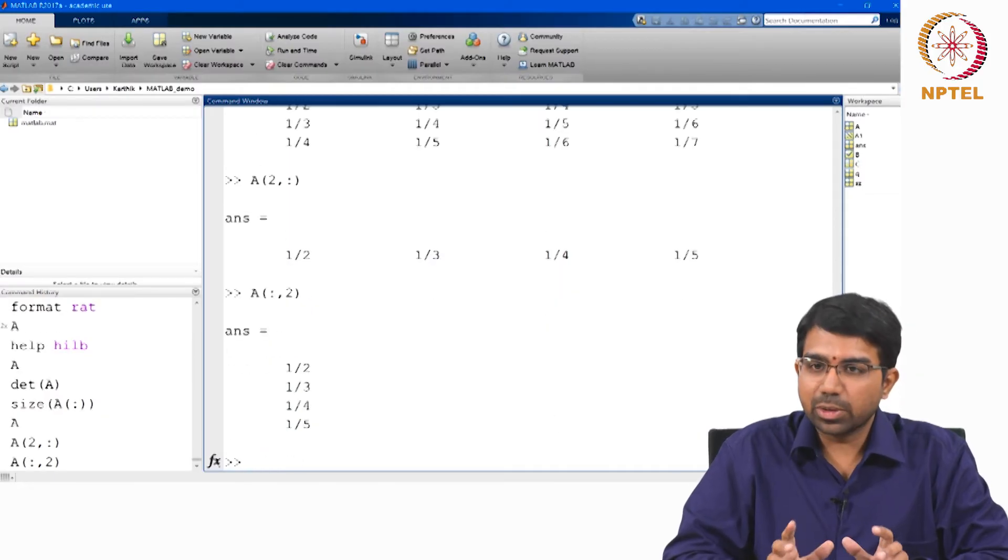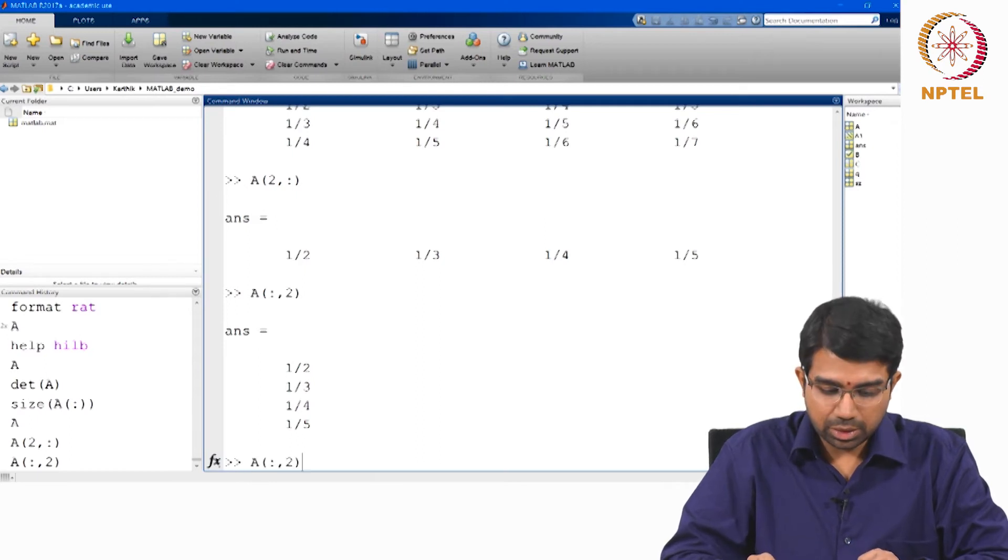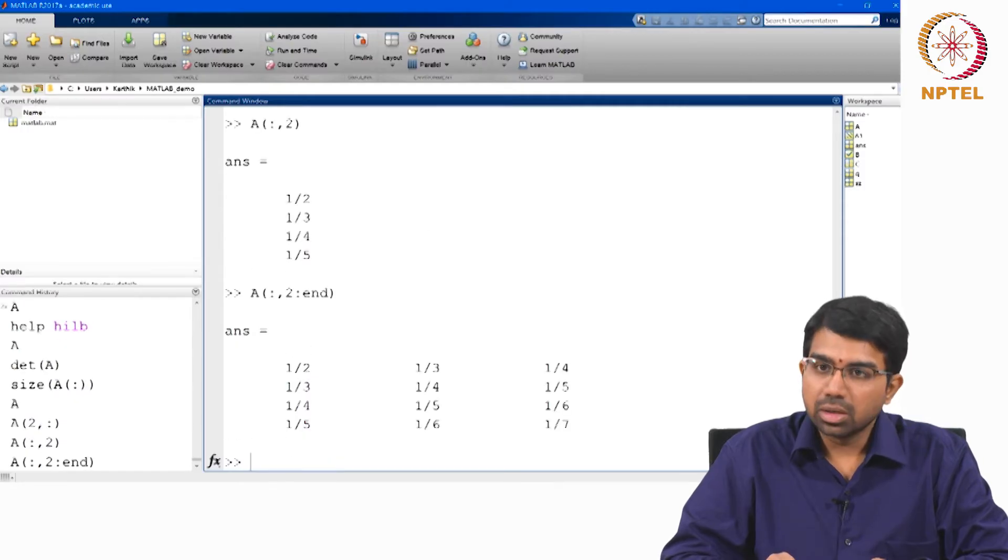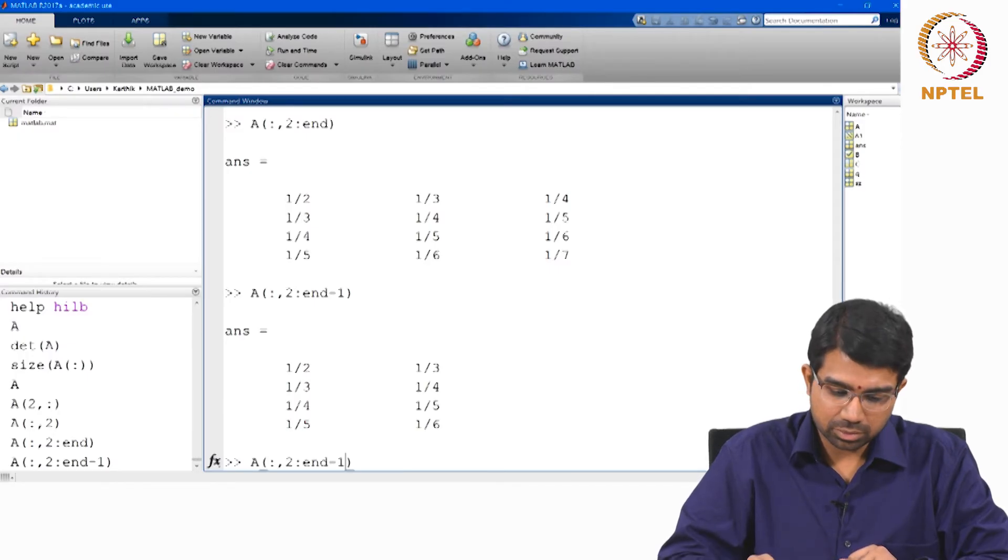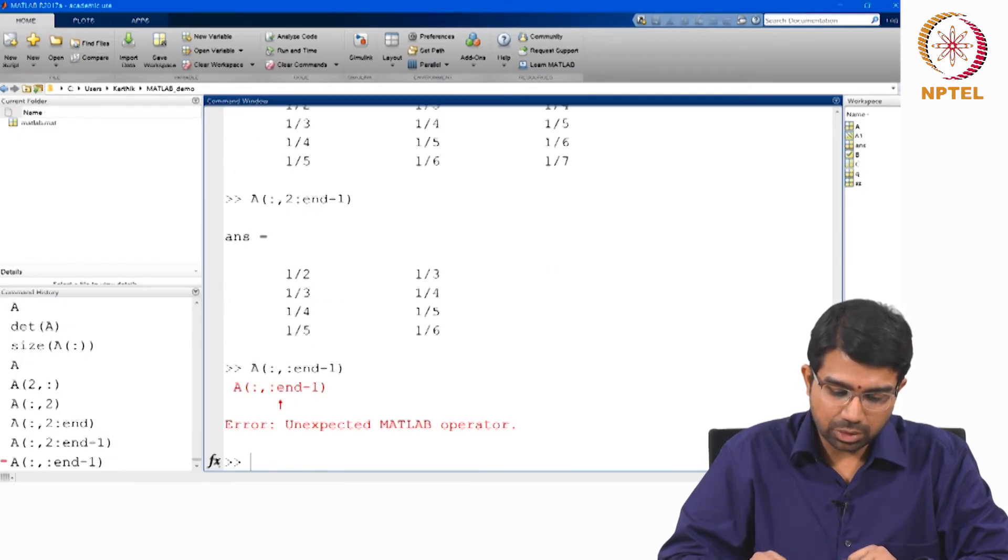So colon is like a wild card, colon means pick all rows, right. And you also have other nicer things. So you can say 2 colon end, you can even say 2 colon end-1, say colon.